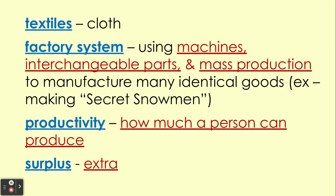Productivity means how much a person can produce. If you are highly productive, you can produce a lot in a short amount of time. If you are not very productive, you might not be getting much done. Finally, surplus just means extra. During the early to mid-1800s, farmers are going to become more productive — they can produce more — which means a surplus of food, which they can then sell, meaning not everybody has to be a farmer anymore, and some people can go work in factories.